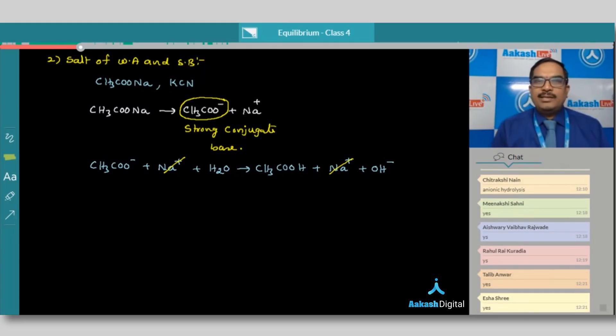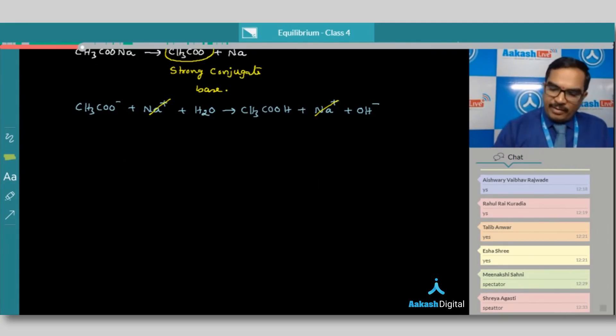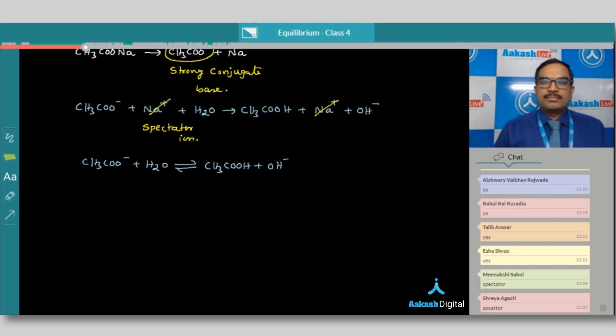So these kinds of species are called as? Anyone? Or ions are called as? Any idea? Good, Meenakshi. Spectator ion. Na+ is a spectator ion. So what is the overall reaction? That is, only acetate ion, nothing but anion, is reacting to give unionized weak acid and OH- ions will be present. Is it clear? This anion part is reacting here. So we can say this is anionic hydrolysis.